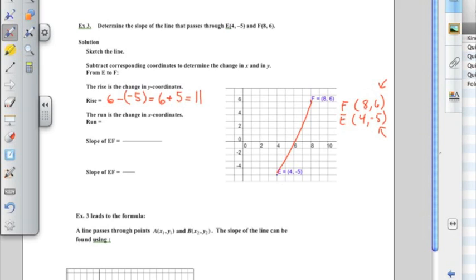So my run is the change in the x coordinates, and so here's my first x coordinate, 8, and here's my second, 4. And I'm just going to say, pardon me, 8 subtract 4, and then it's equal to 4.